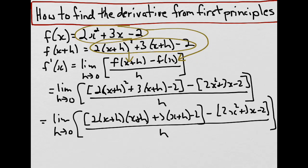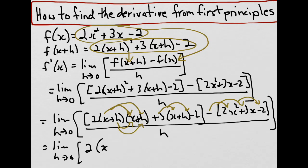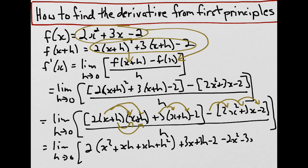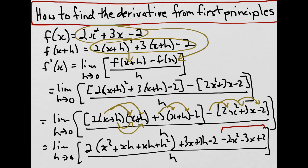Let's apply some algebraic techniques to simplify. We can use FOIL — first, outside, inside, and last — and then distribute across the brackets. We get the limit as h approaches zero of 2x squared plus 2xh plus 2xh plus 2h squared plus 3x plus 3h minus 2, minus 2x squared minus 3x plus 2, all divided by h. An important note: when we distribute the negative sign across the brackets, the signs change — this is a common place where mistakes are made.